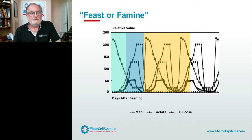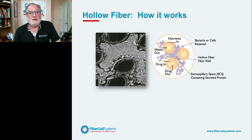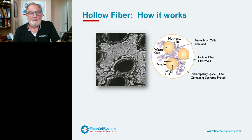Cell culture conditions are constantly changing and cells spend very little time in their optimum homeostatic conditions. Hollow fiber is fundamentally different — it is a three-dimensional, more in vivo-like way of growing cells. It's based on the principle that each hollow fiber is like a filter, shaped like a drinking straw, about 200 microns in diameter. They're sealed in a polycarbonate shell using polyurethane potting material. We grow the cells on the outside of the fiber, setting up a semi-permeable barrier between the flowing media and the cells.